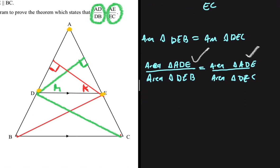Step number five, we just need to conclude. AD divided by DB will therefore be equal to AE divided by EC.